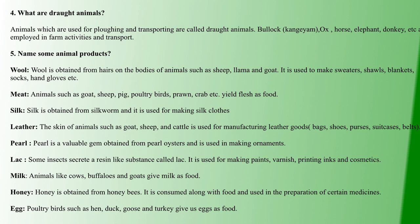Next is leather, made from the skin of goat, sheep, and cattle, used to produce leather goods like bags, shoes, and purses. Then pearl — an invaluable gem produced by oysters, used for ornaments. Also lac, secreted as resin by some insects, used in paints, varnish, printing inks, and cosmetics.